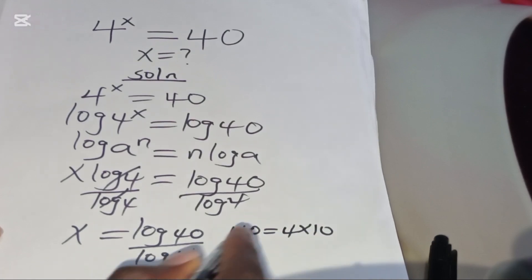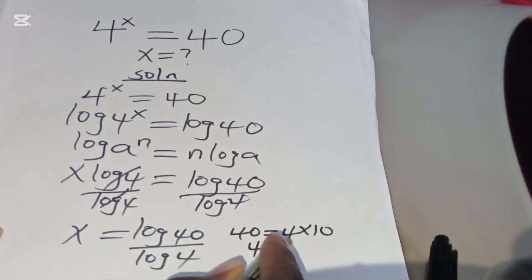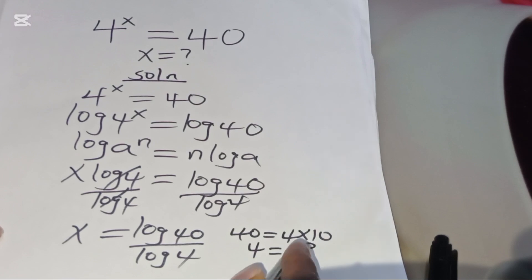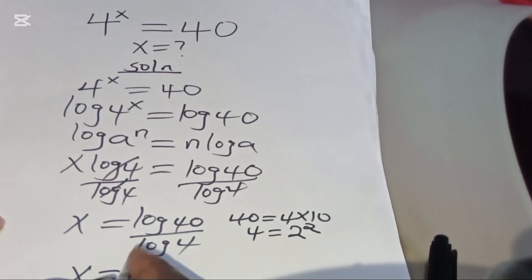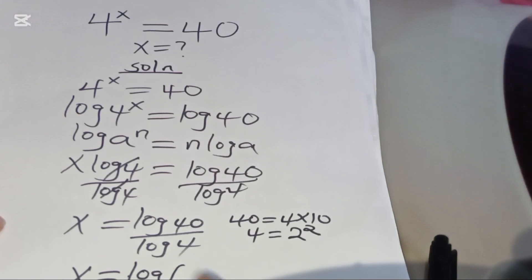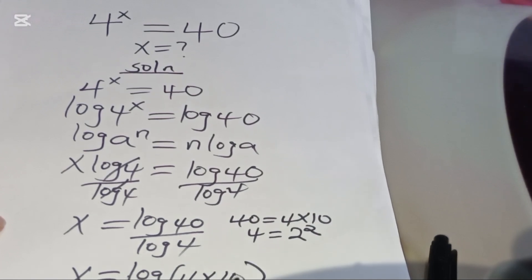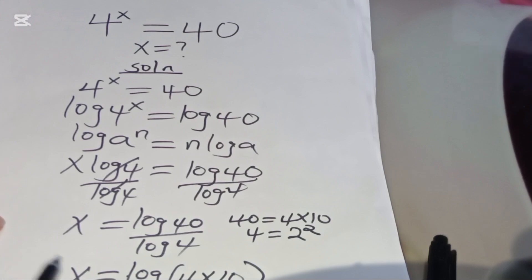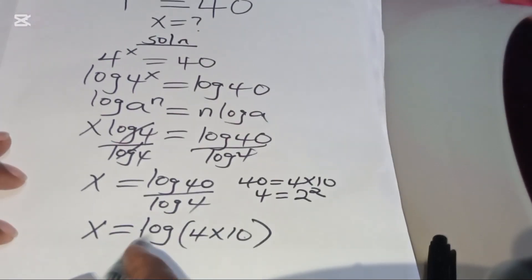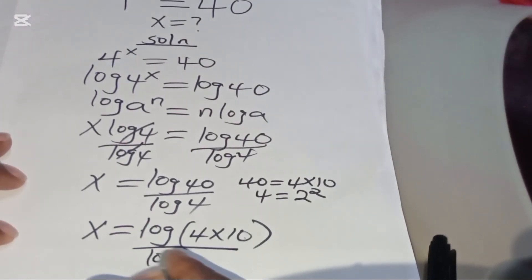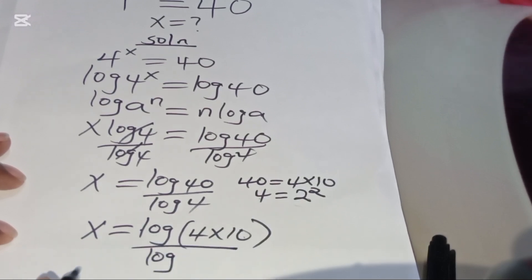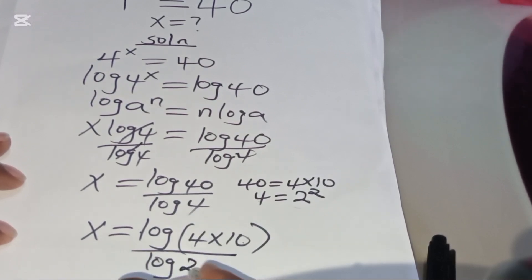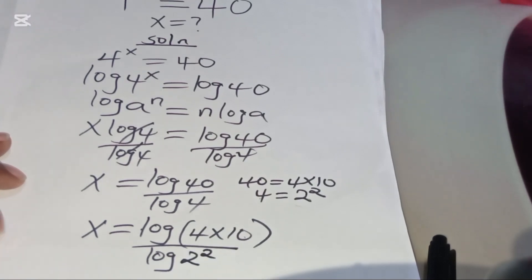At this point we can express 40 as 4 times 10, and we can also express 4 as 2². Therefore we have x equal to log(4×10) divided by log(2²), which is the same as log(2²).